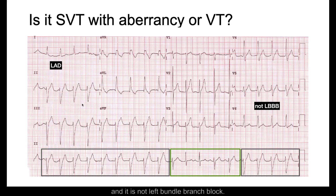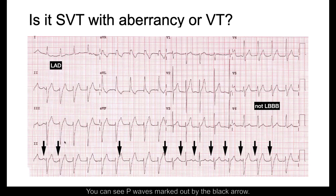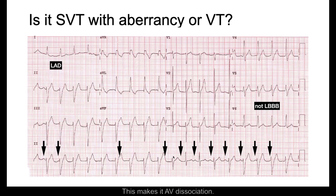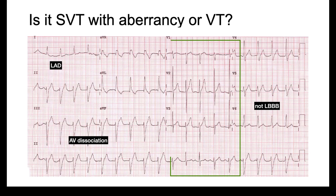A survey of lead 2 looking at P waves will show that there are P waves on lead 2. You can see P waves marked out by the black arrow, and it suggests that there are more QRS complexes than P waves. This makes it AV dissociation.